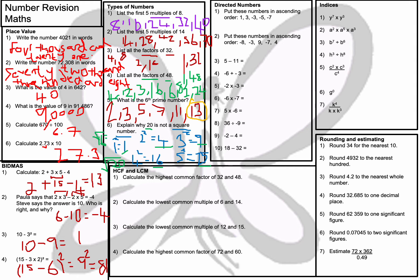This section is on directed numbers. Question number 1: put these numbers in ascending order. Ascending order means smallest to biggest. The bigger the negative, the smaller the number — so the order is: −7, −5, −3, 1, 3.